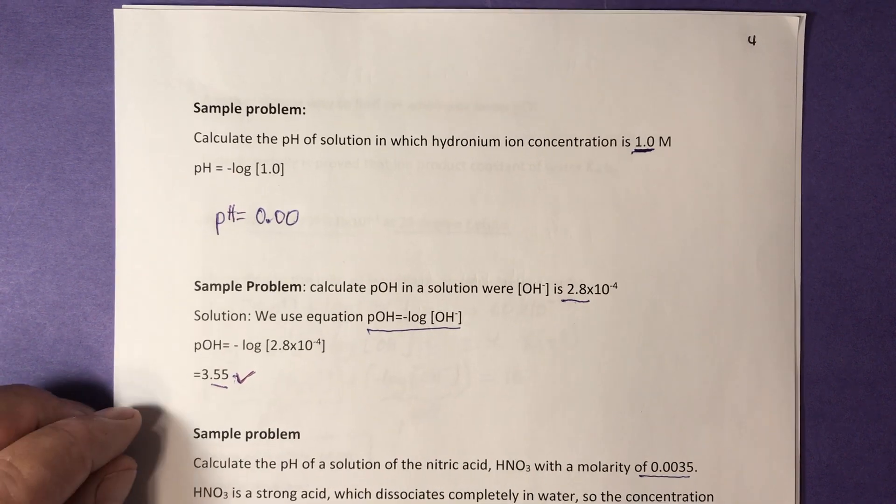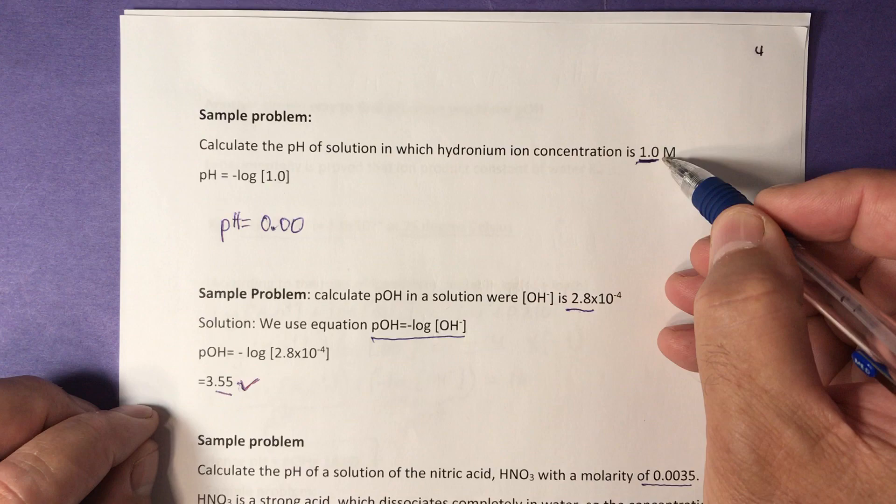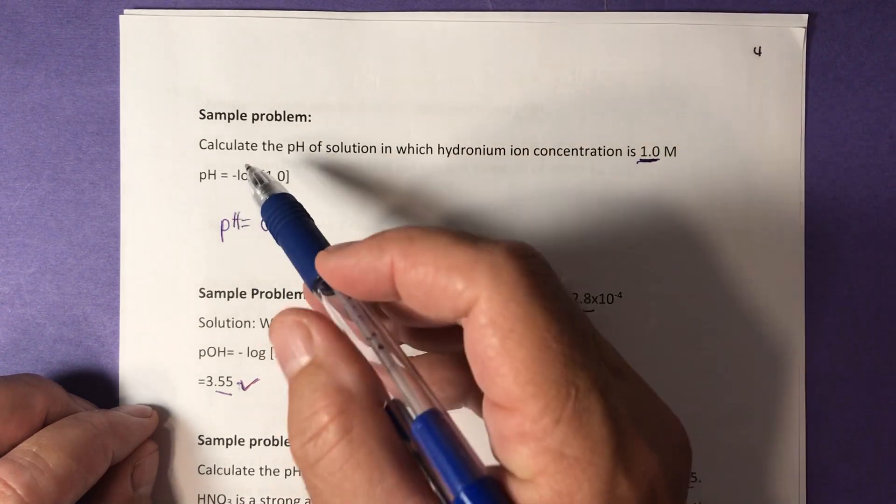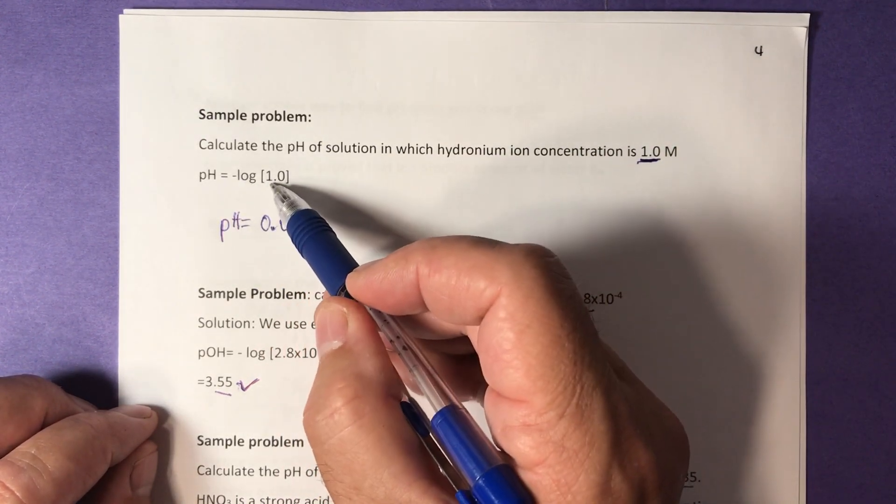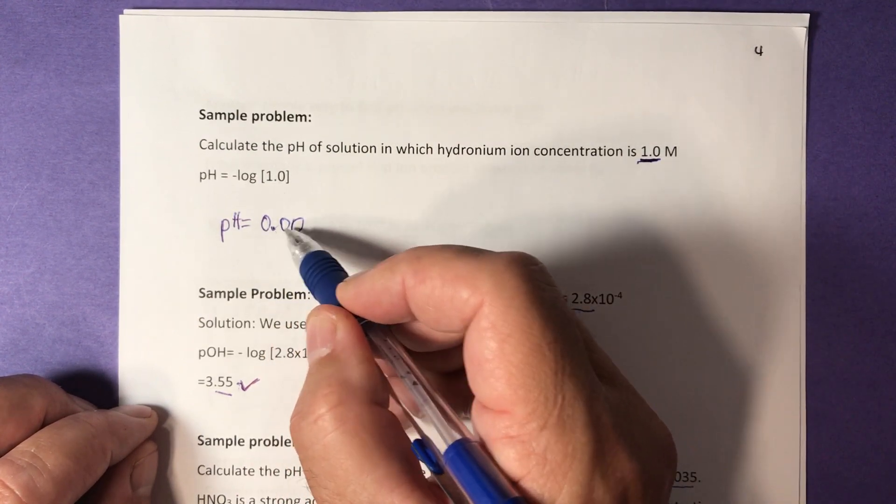Sample problem. Calculate the pH of a solution in which hydronium ion concentration is 1.0 molar. Apply the formula, plug in the concentration, and we'll get 0.00.